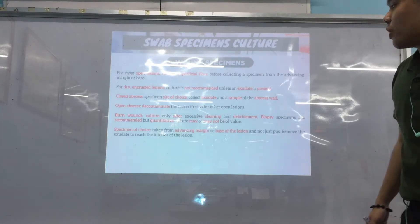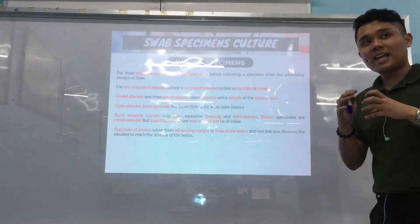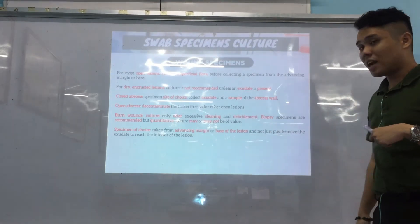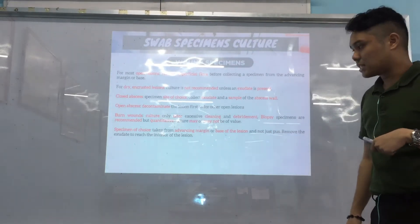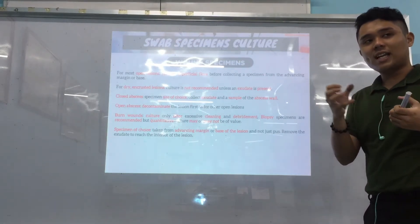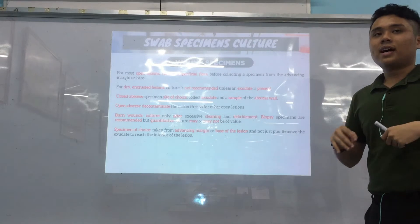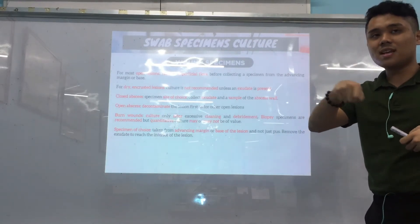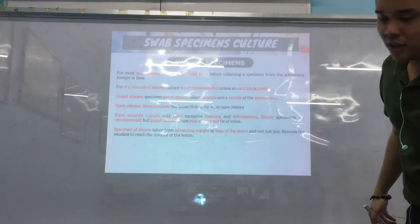The specimen of choice for open lesions is taken from the advancing margin or base of the lesion — not just the pus. If there is pus, remove it first until the lesion area is clear, and then take the sample from the advancing margin and the base.